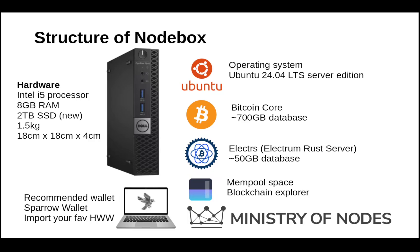Here is the structure of the Bitcoin node box. Generally speaking, you'll need some hardware. I like the Dell Optiplex, which is in what's known as the ultra small form factor. I generally get an i5 processor, eight gigs of RAM, a two terabyte SSD, and it weighs in at about one and a half kilos. Those are the dimensions you can see on screen.